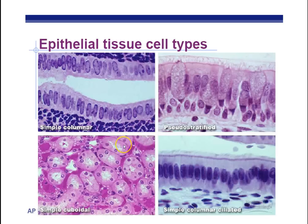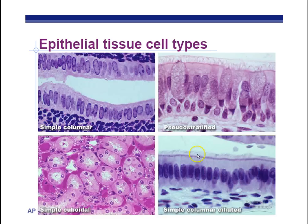Here are pictures of epithelium. Simple columnar — you can see the columns and little nuclei inside. Pseudostratified — you can't make out distinct layers. Cuboidal — looks like cubes. Simple columnar ciliated has little cilia that sweep up bacteria caught in your throat, moving them back up into your mouth, where you swallow them into your stomach to be digested.